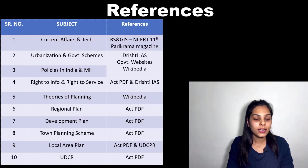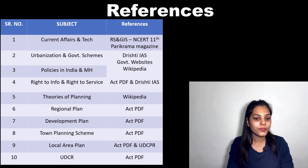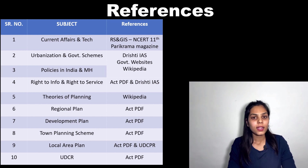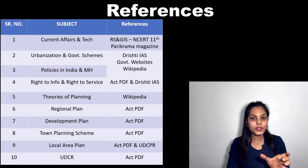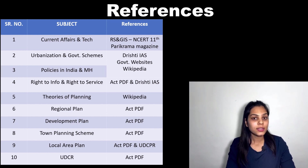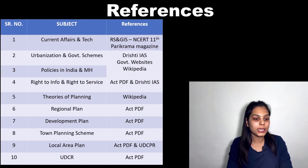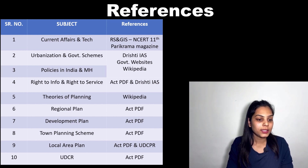Now we will talk about references — from where you have to study all these subjects. For current affairs, you can study from Parikrama. For technology — that is RS and GIS — you can study from the NCERT 11th standard book. For urbanization, government schemes, and policies in India and Maharashtra, you can study from Drishti IAS, government websites, or Wikipedia. For example, if they have given the AMRUT scheme, search 'AMRUT scheme Drishti IAS' and you will get a short summary with all important points. For right to information and right to service, this can be done from the Act PDF and Drishti IAS.